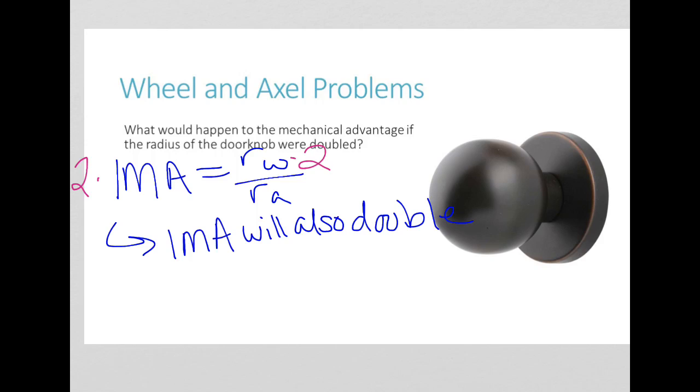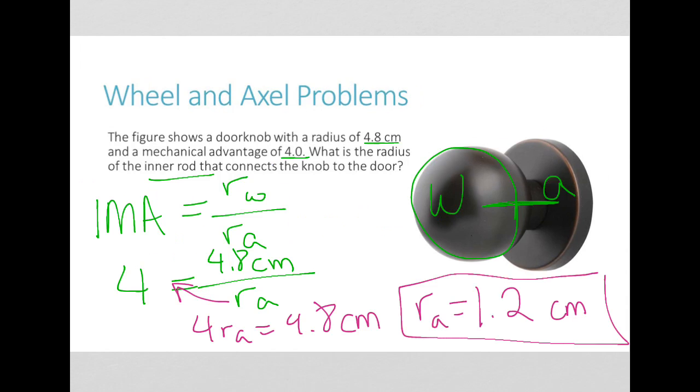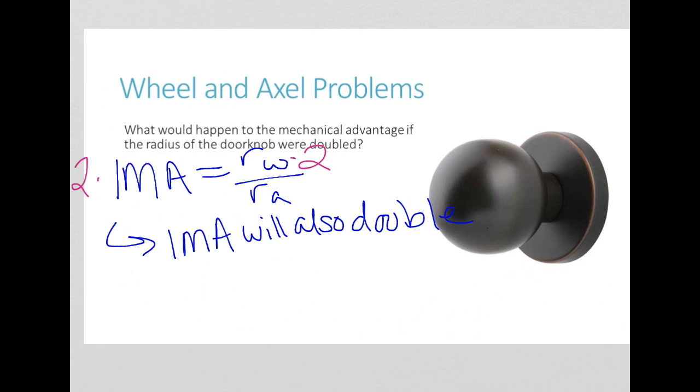Another way to do that is, I had this last problem with certain values. So if I'm trying to find my IMA here, and I double the radius of my wheel, and if the radius of my wheel is 4.8, if I double that, I get 9.6.